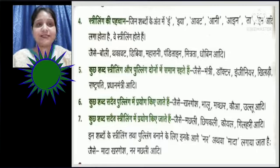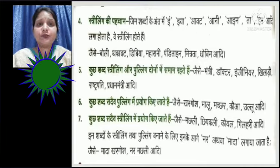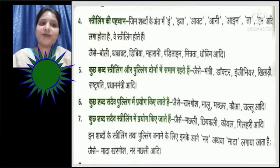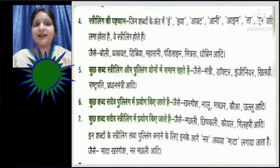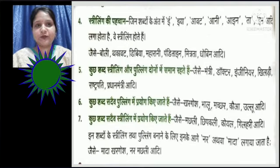Kuch shabd sadaiv Striling mein hi prayog kiye jaate hain. Voh shabd kaun se hain? Dekhiye - machli, chipkili, koyal, gilahri, aadi. Ye hamesha Striling mein hi prayog kiye jaate hain. In shabdon ke Striling tatha Pulling banane ke liye inke aage 'nar' athva 'mada' lagaya jaata hai. Jaise 'mada khargosh' ya 'nar machli'. To agar hum khargosh ka striling banayenge to kya lagayenge? Mada khargosh - to vo Striling ban jayega.